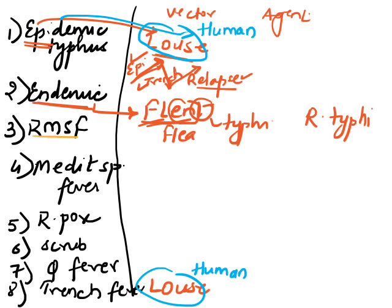For Rocky Mountain spotted fever, R stands for R — that is Rickettsia rickettsii. So for Rocky Mountain spotted fever, the causative agent is Rickettsia rickettsii.